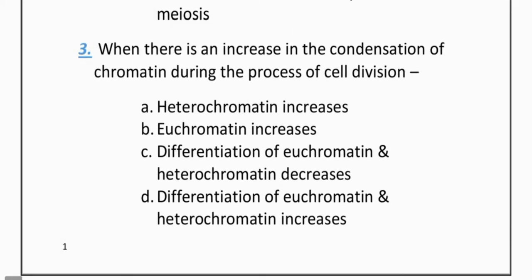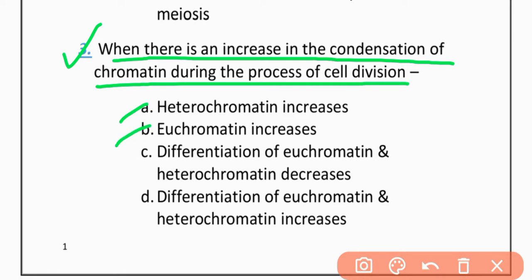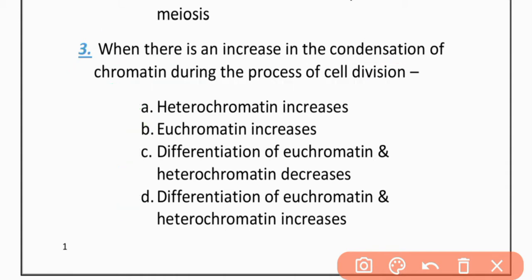MCQ 3: When there is an increase in condensation of chromatin during the process of cell division — Option A: Heterochromatin increases. Option B: Euchromatin increases. Option C: Differentiation of euchromatin and heterochromatin decreases. Option D: Differentiation of euchromatin and heterochromatin increases. The correct option is C.